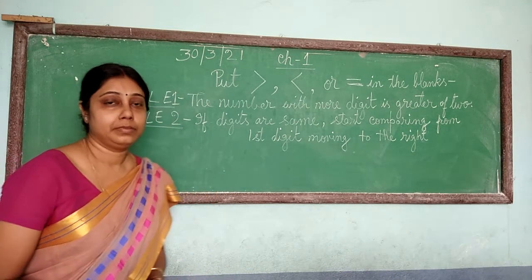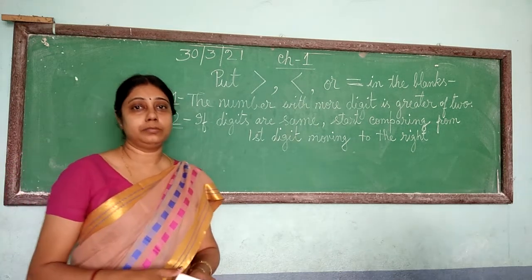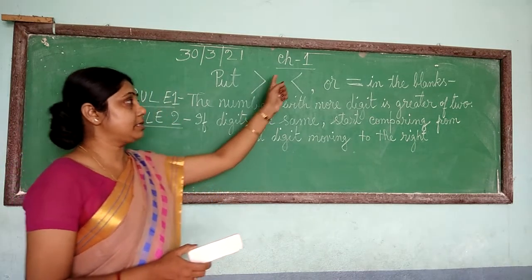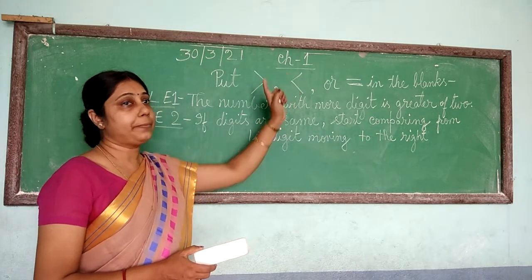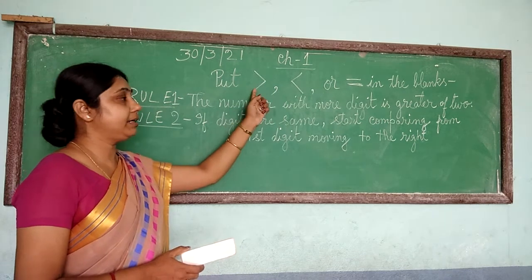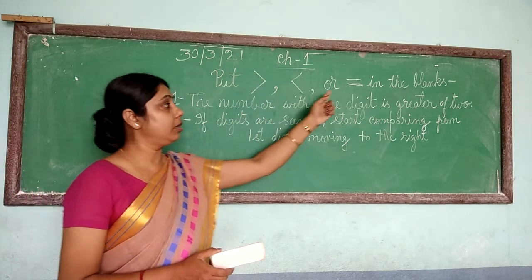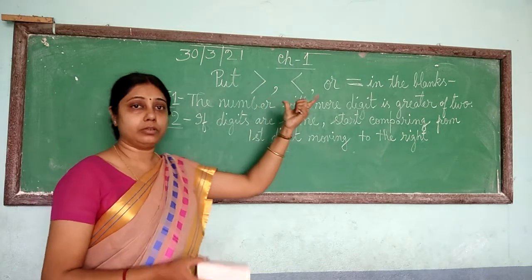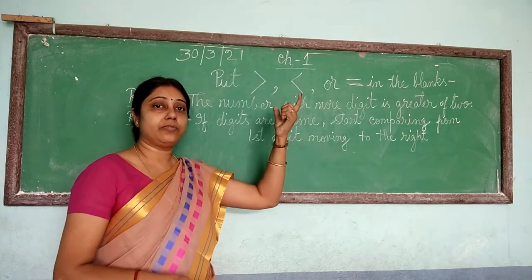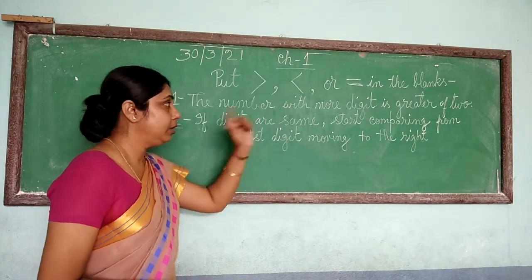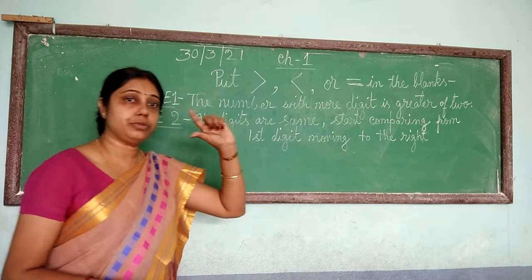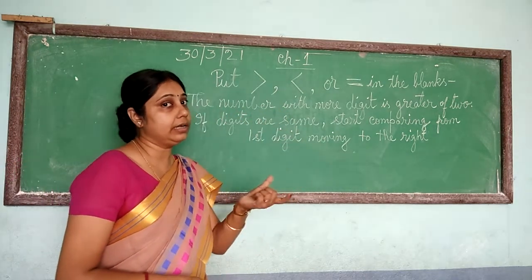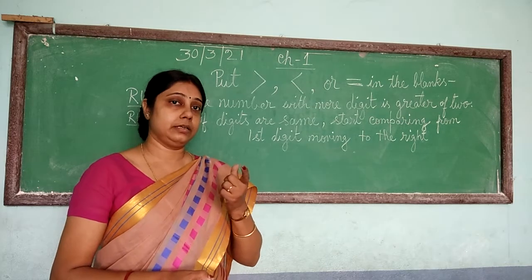Good morning children. How are you? I hope you all are fine. Today we are going to discuss chapter 1. The subtopic is putting greater than, less than, or equal to signs in the blanks. This is a very common topic because from a very early age you are going to learn this. We are going to recall the previous work and today we will learn the three-digit comparison.